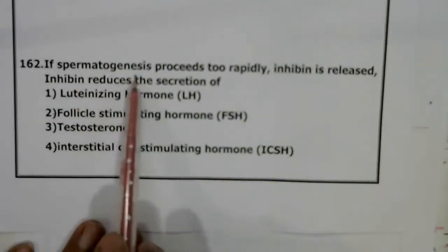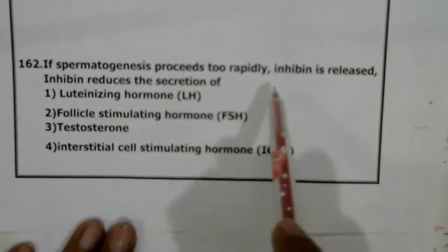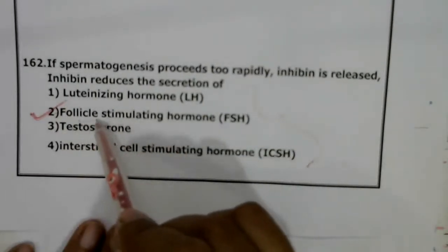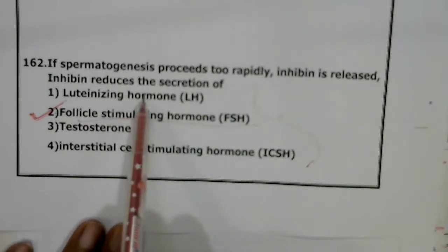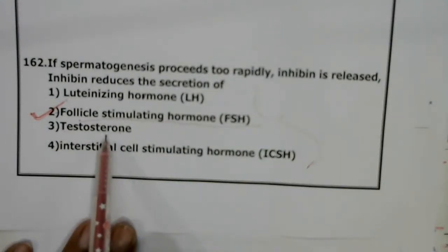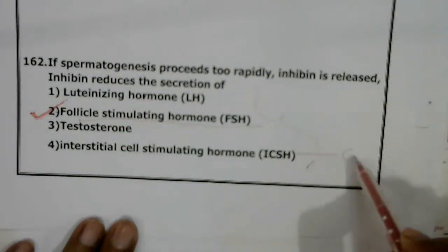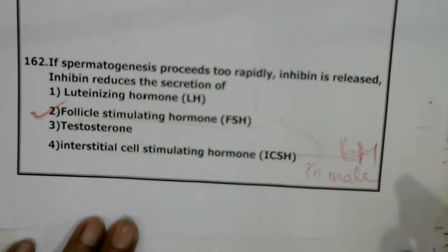Question 161: If spermatogenesis proceeds too rapidly, inhibin is released. Inhibin has a negative feedback inhibition on follicle-stimulating hormone (FSH). Luteinizing hormone (LH) is negatively feedback inhibited by testosterone. Interstitial cell-stimulating hormone (ICSH) is another name for LH in males.